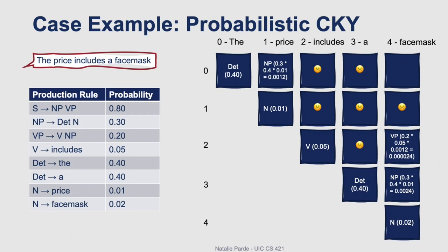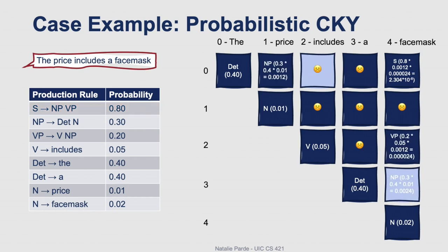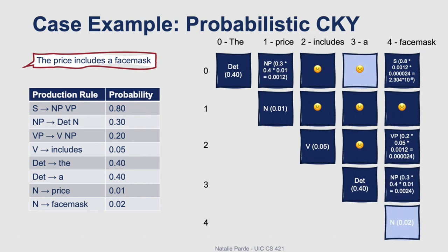At long last, we'll try to find a production rule that matches the entire input. Our first option is impossible, but our second option — a noun phrase followed by a verb phrase — is a match, so we'll go ahead and add that probability to our matrix. We'll still proceed with checking our other options in case there's another valid parse, but nothing else matches. So we end up with a single parse for this input, with a probability of 2.304 times 10 to the negative eighth power.